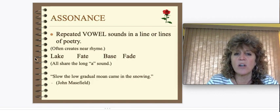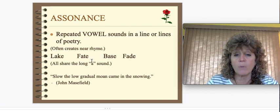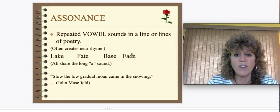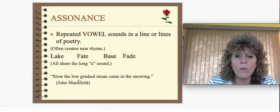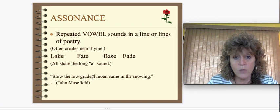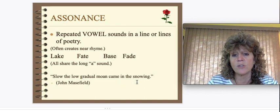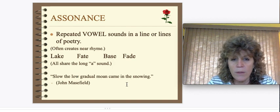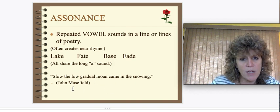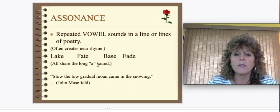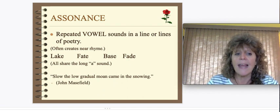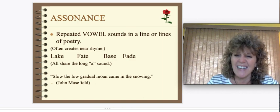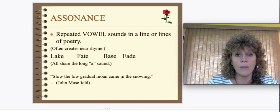Just the opposite of consonance is assonance — it's when you repeat a vowel sound in the lines of poetry. For example: lake, fate, base, fade. All these words have different ending sounds, but they all have the long A sound. Here's an example from a poem: "Slow the low gradual moan came in the snowing" — kind of an O sound all the way through, because the poet took that sound and ran it right through the whole sentence.